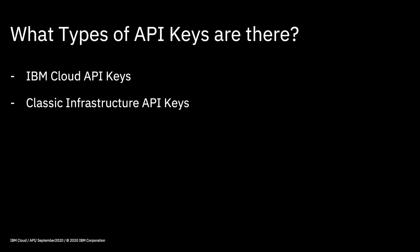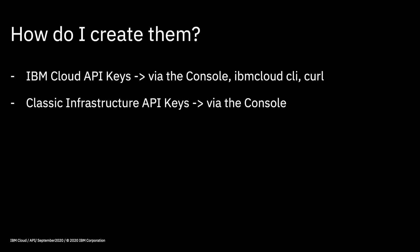So depending on the type of use that you have for your API key and the type of program you're actually writing, you'll need either an IBM Cloud API key or a classic infrastructure API key. Creating them is really simple. With IBM Cloud API keys you can either create those via the console, or you can use the IBM Cloud CLI, or you can also use things like curl commands. But with the classic infrastructure API key, you can effectively do that via the console.